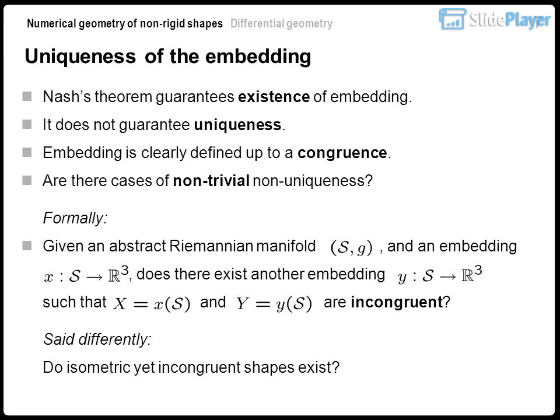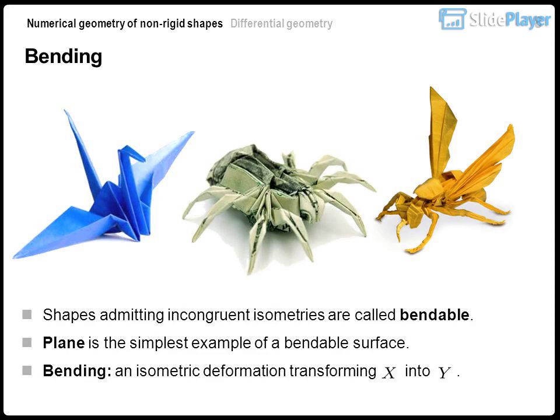Uniqueness of the embedding: Nash's theorem guarantees existence of an embedding but does not guarantee uniqueness. Embedding is clearly defined up to a congruence. Are there cases of non-trivial non-uniqueness? Formally, given an abstract Riemannian manifold and an embedding, does there exist another embedding such that the two are incongruent? Said differently: do isometric yet incongruent shapes exist?